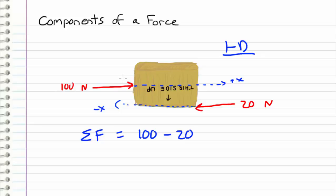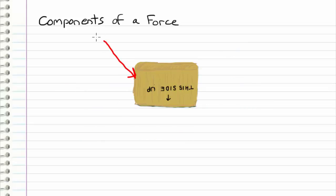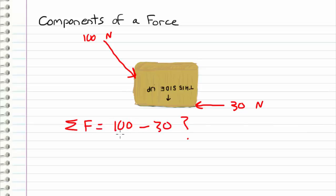But the problem with thinking about things in one dimension is that we lose the notion that forces are really vectors — they're not necessarily just magnitudes. So what if I were to load my box differently, applying a force of 100 newtons in one direction and a frictional force of 30 newtons in another direction? Can I still take the sum of the forces as 100 minus 30? Well, technically we could, but we're not going to get the right answer. Forces, no matter what dimension we're considering, should always be thought of as vectors — they have a magnitude and a direction. Size does matter, but the direction or angle they point also matters.